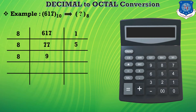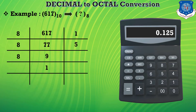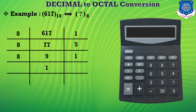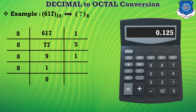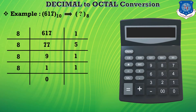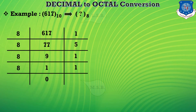Now 9 is divided by 8 and we get the answer 1.125. Here 1 becomes the quotient and the remaining term 0.125 is multiplied by 8 to give a remainder of 1. In the last step, 1 is divided by 8 and we get 0.125. Here 0 becomes the final quotient and 0.125 multiplied by 8 gives us a final remainder of 1. Now we assign LSB and MSB to the remainders.